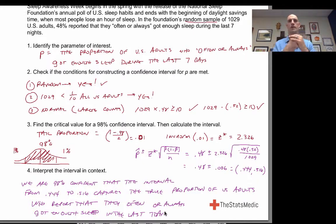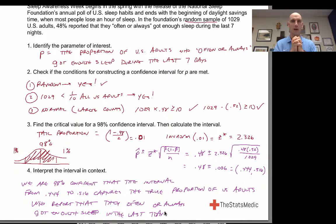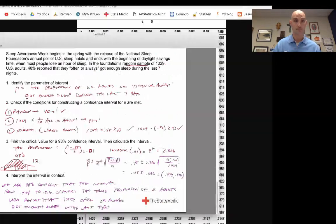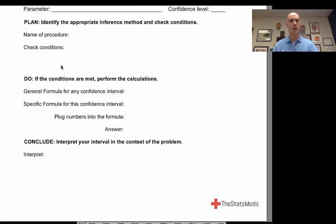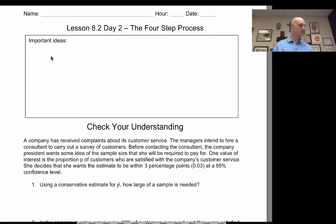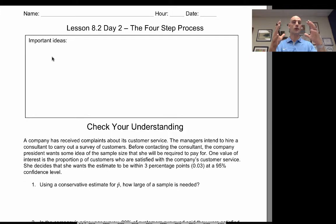We learned what Z-star is: the Z score at which the area under the curve gives us our desired confidence interval — whether 90%, 95%, 98%, or any other value. Next, we'll learn a four-step process for constructing these confidence intervals and how to apply it to a given situation.